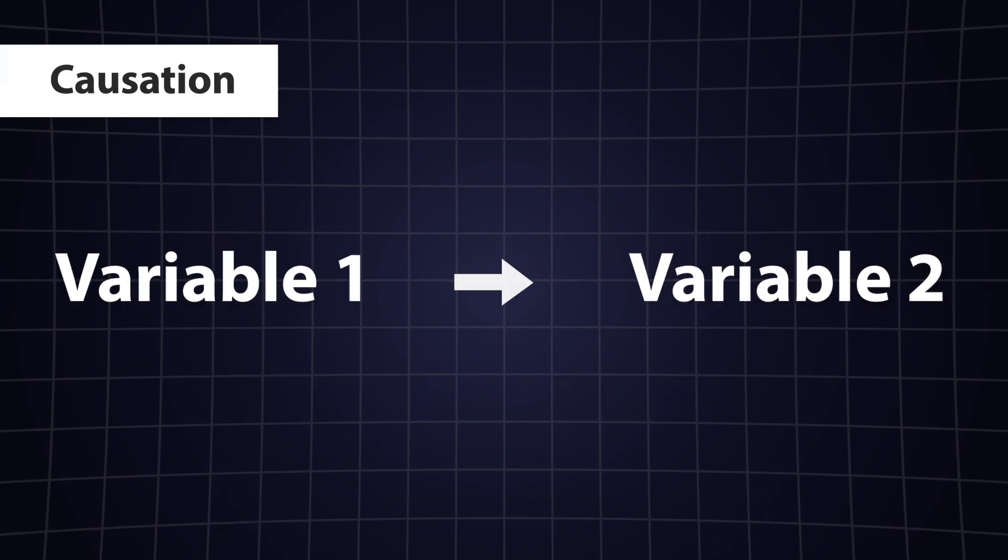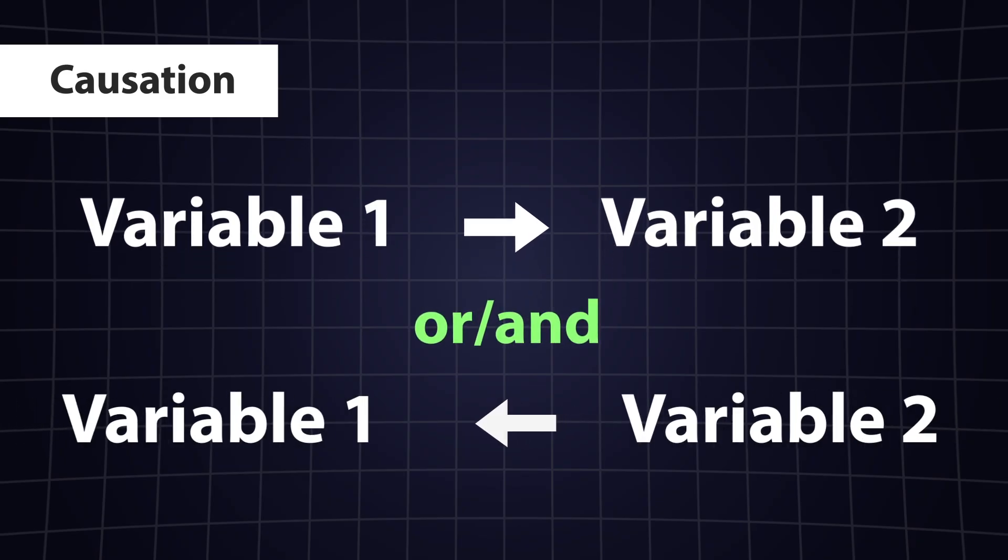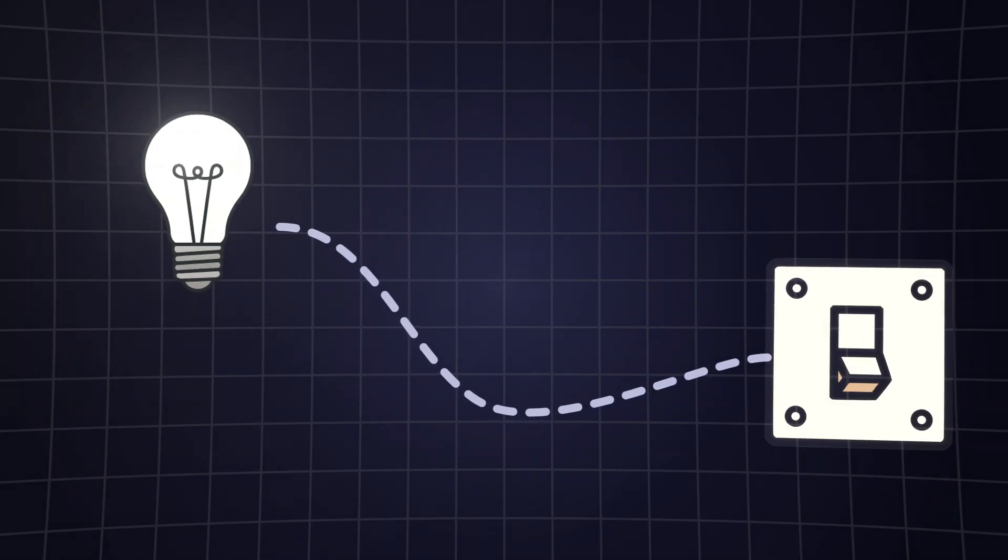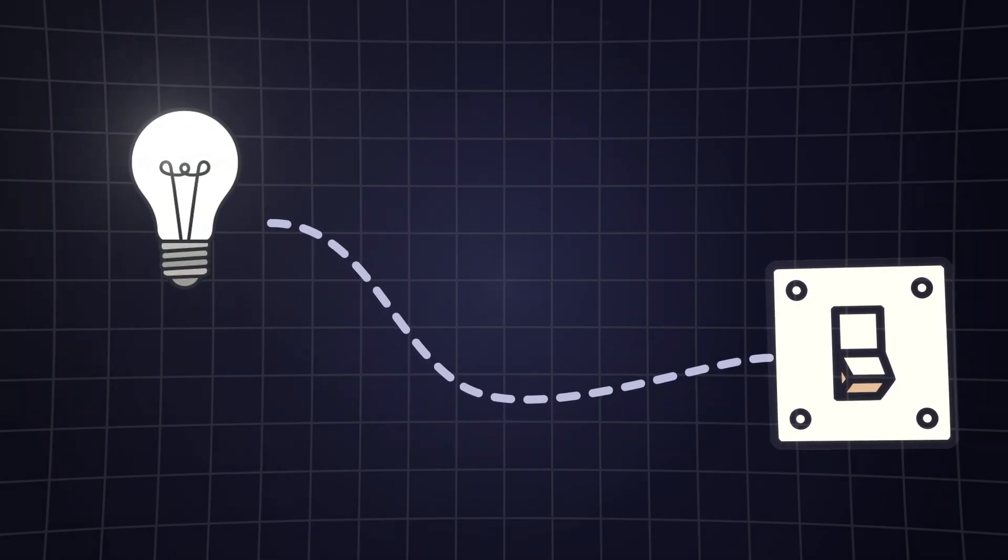Causation, on the other hand, means that one event directly causes another. For example, if you flip a light switch and the light turns on, flipping the switch causes the light to turn on.